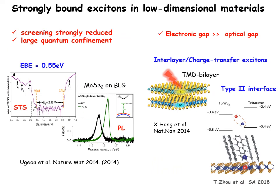Beyond bulk materials with low dielectric screening such as insulators or organic compounds, strong excitonic effects are clearly visible for low-dimensional materials like 2D materials, where due to the large dielectric mismatch and spatial confinement, excitons stable at room temperature have been experimentally observed — for instance for molybdenum diselenide on a bilayer of graphene, where the electronic gap is much larger than the optical gap measured with photoluminescence, or for interlayer excitons observed in many TMD layers or at the interface between organic molecules and 2D materials.